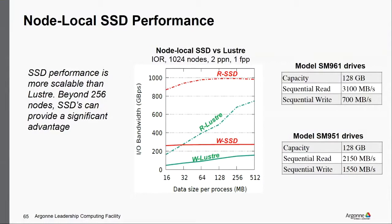An additional note from the audience: to get the highest write performance on SSDs, you need to use multiple threads — at least two to four threads per node to get close to the peak of approximately 1.5 gigabytes per second write performance, at least with the SM950 SSDs.